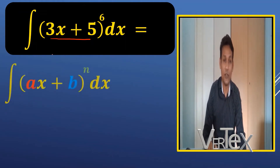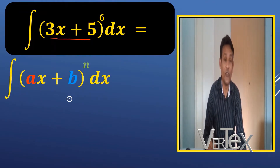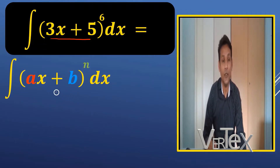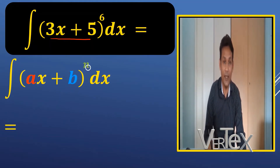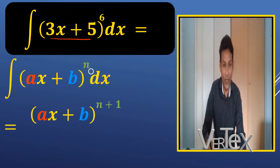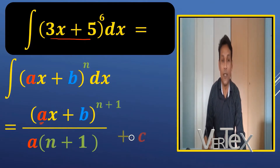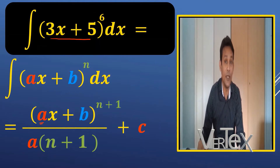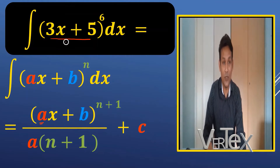Now I want to write the second formula of integration. The first is simple integration, and the second handles this bracket-with-power form. When we integrate (ax plus b) to the power n, the result is (ax plus b) to the power n plus 1, divided by a multiplied by (n plus 1), plus c. This is the basic formula. In simple algebra integration, we have just two types, and this is the second type — when we have the mx plus c form.